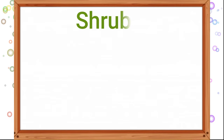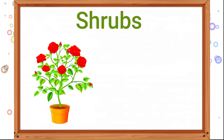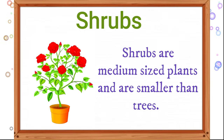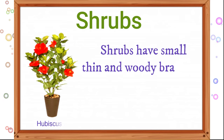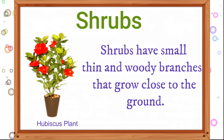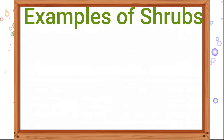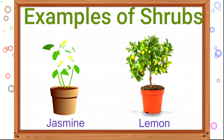Next one: shrubs. Shrubs are medium-sized plants and are smaller than trees. Shrubs have small, thin, and woody branches that grow close to the ground. Examples of shrubs are jasmine and lemon.